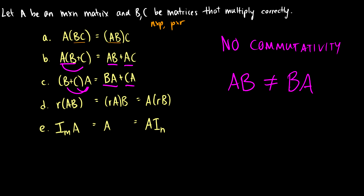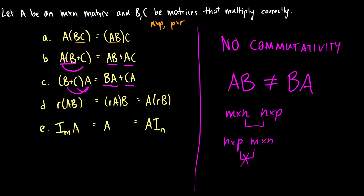AB is not the same as BA in general. We already looked at this: we could have an m by n times an n by p, that's fine. But if we switch the order to n by p times m by n, then this may not work. Switching the order will not always work. Fourth property: if we have a scalar multiplied by two matrices, we can multiply the scalar into A or into B — scalars can be applied whenever.